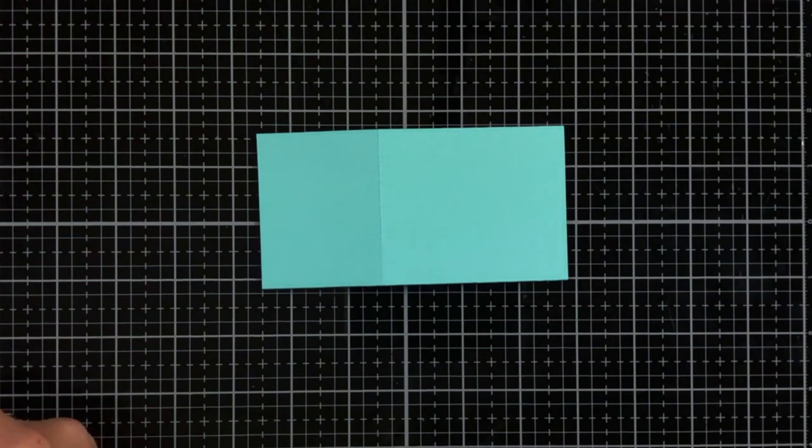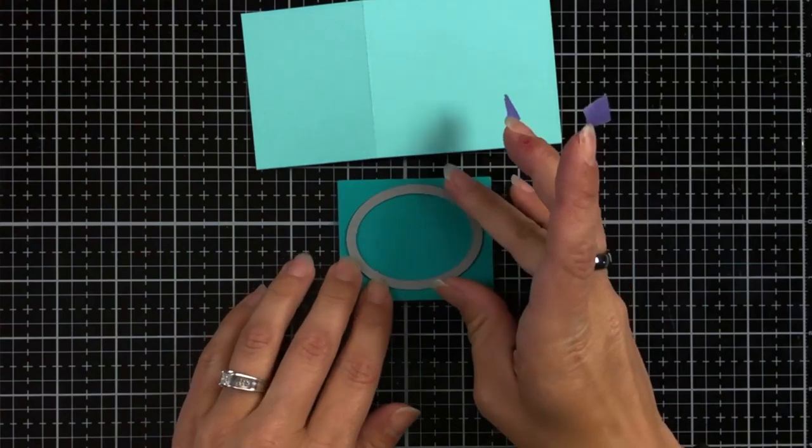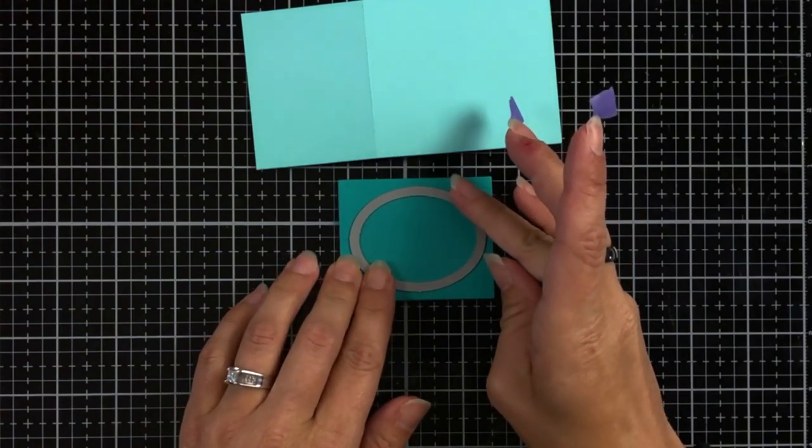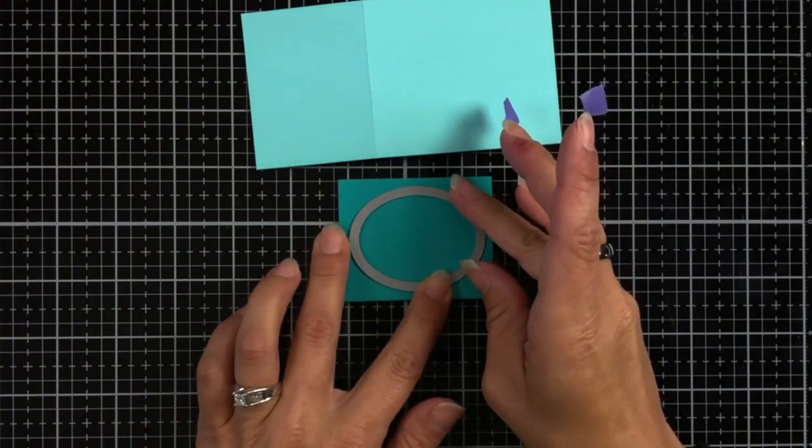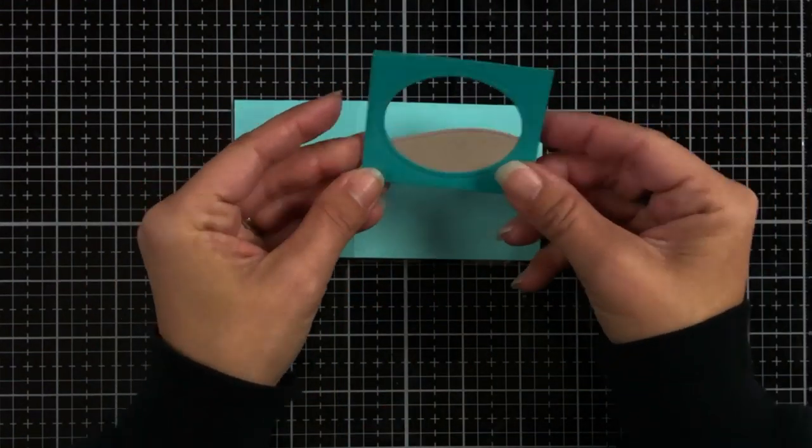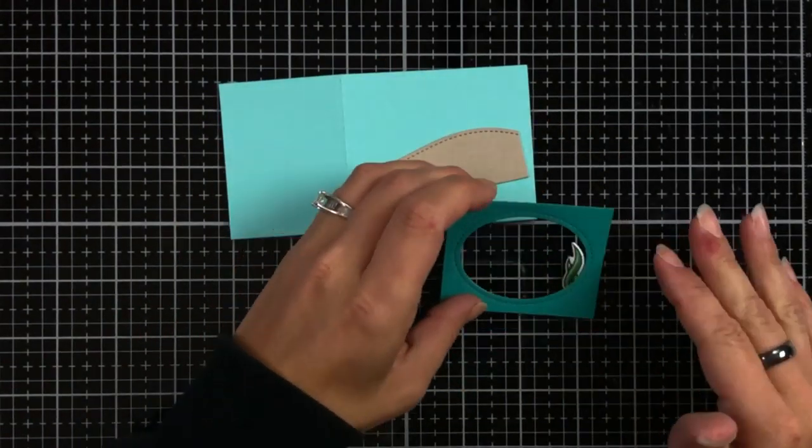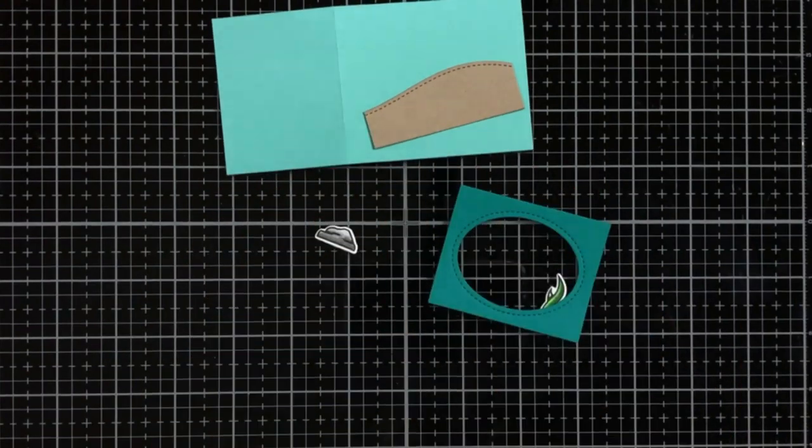And I'm going to decorate the front of this. So using that rectangle that popped out from our window when we cut our shadow box, I'm taking that stitched oval that's also in the shadow box die. And I'm going to die cut out just a small oval window from here. So I'll hold that in place with some low-tack tape.